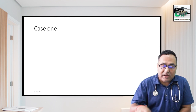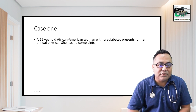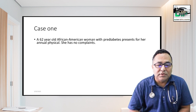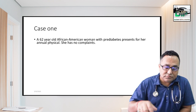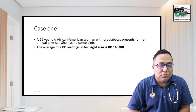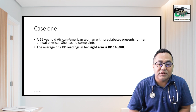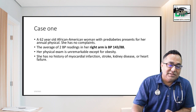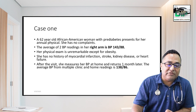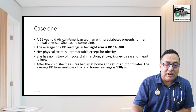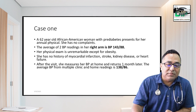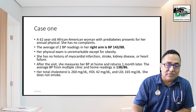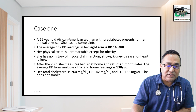Let's go with a case and discuss gradually. This is a dummy case taken from eMedicine. A 62-year-old African American woman with pre-diabetes presents for her annual physical exam. She has no complaints. The average BP reading taken twice in her right arm was 143/88 mmHg. Physical examination is unremarkable except for obesity. She has no myocardial infarction, stroke, kidney disease, or heart failure. She measures her blood pressure at home and returns one month later. The average BP from multiple clinic and home readings is 138/86 mmHg.